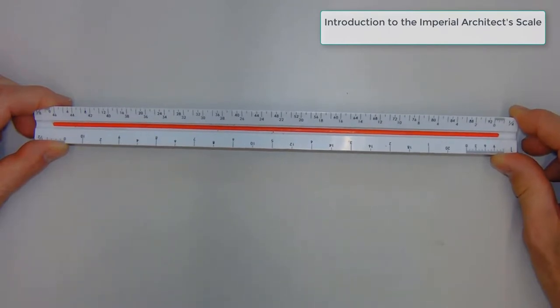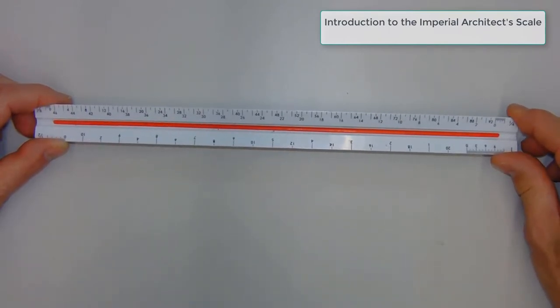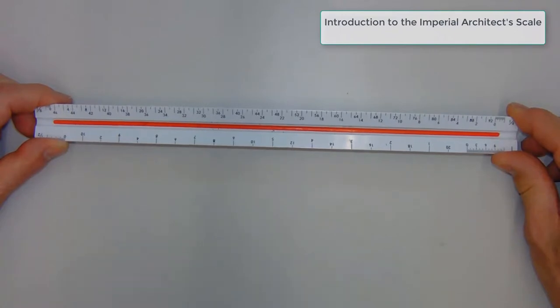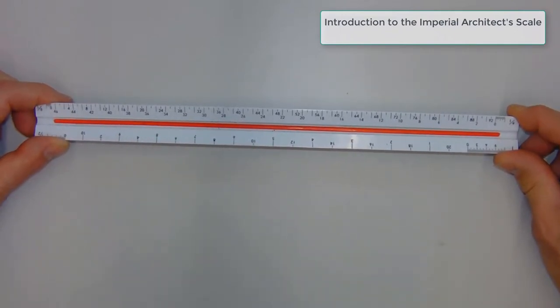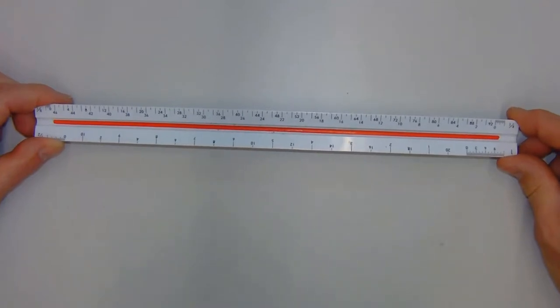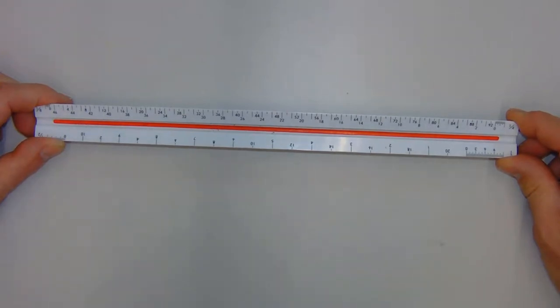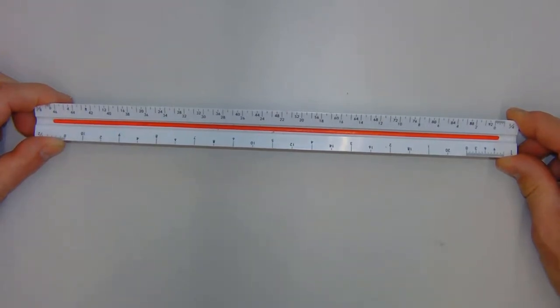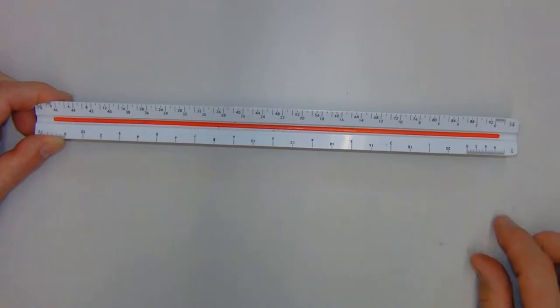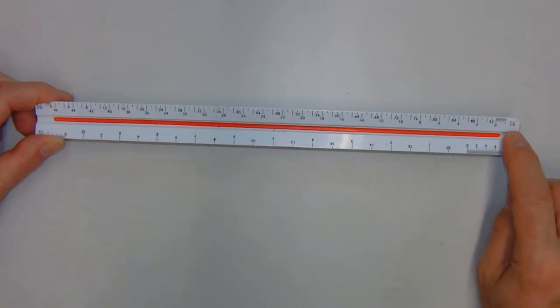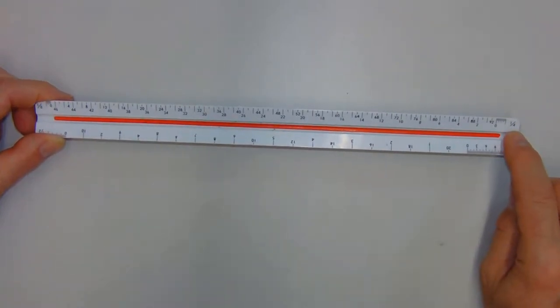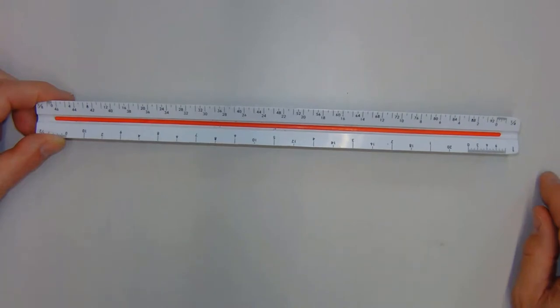You can see that the architect scale has different sides and it's got actually different scales on the same edge. In this example, we can see there's a quarter inch scale reading from right to left and an eighth inch scale reading from left to right.